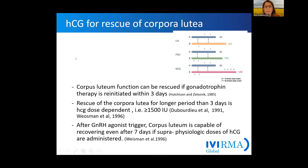We now know that giving hCG we can rescue the corpus luteum, because the problem causing severe luteolysis is that the corpora lutea don't receive any stimulation due to the short LH peak after the artificial LH surge. It was shown many years ago that corpus luteum function can be rescued if gonadotropins are given within three days. If longer than three days, giving a higher amount of hCG can still save the function of the corpora lutea — up to seven days when supraphysiological doses of hCG are given.